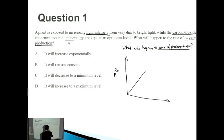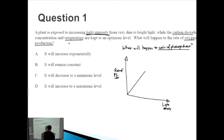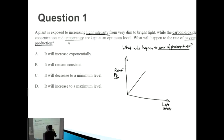On the y-axis we have rate of photosynthesis, and on the x-axis we have light intensity. Remember: always place the independent variable on the x-axis and the dependent variable on the y-axis. As light intensity increases, the rate of photosynthesis also increases linearly, and then once it caps out, it levels off at a maximum.